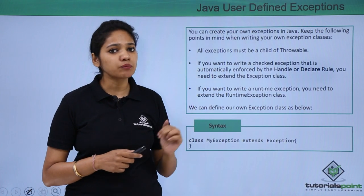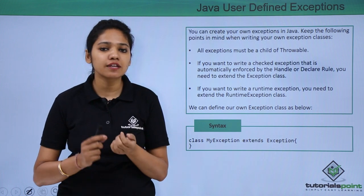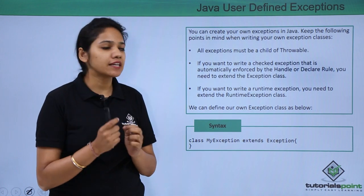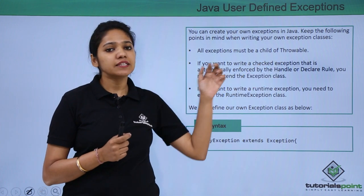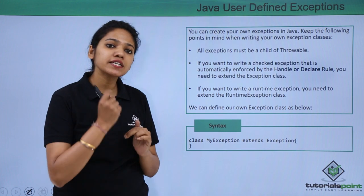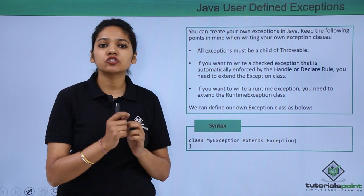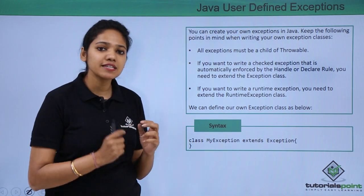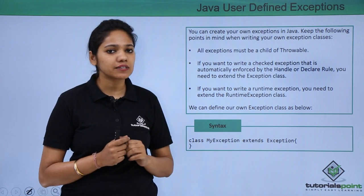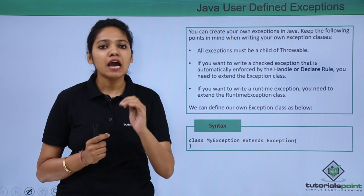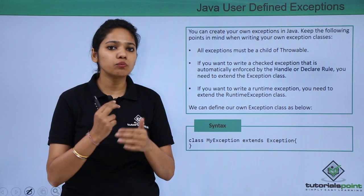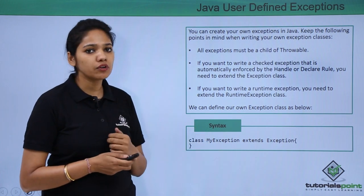These exceptions that you are defining yourself — your customized exceptions — should extend the Throwable class. This Throwable class consists of Exception and Error. If it is a checked exception, it should extend the Exception class. If it is a type of runtime exception, it should extend the RuntimeException class. We will understand how to create and throw an exception with the help of an example.